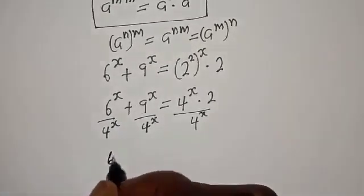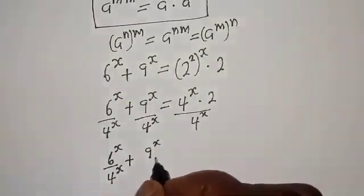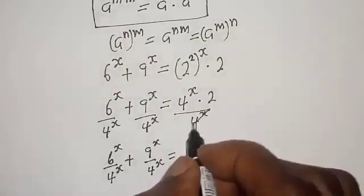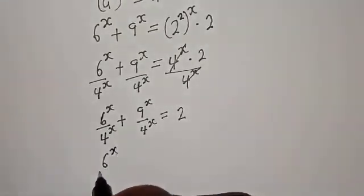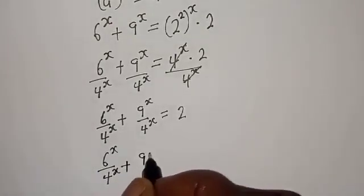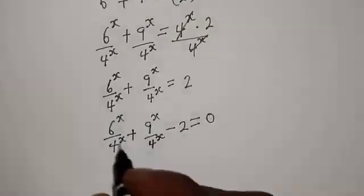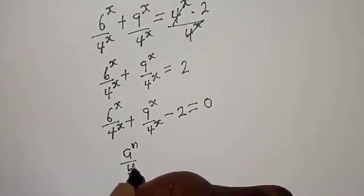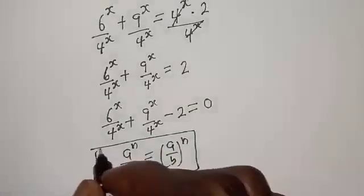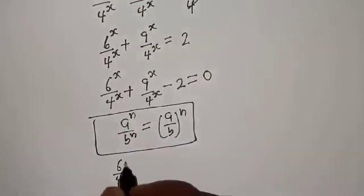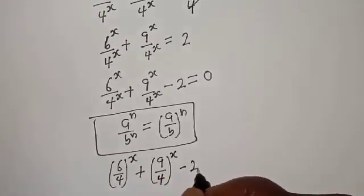6 raised to power s plus 9 raised to power s equals 4 raised to power s multiplied by 2. Let's divide both sides by 4 raised to power s. So we get 6 raised to power s over 4 raised to power s, plus 9 raised to power s over 4 raised to power s, minus 2 equals 0. Note that a raised to the power n over b raised to the power n equals a over b to the power of n.